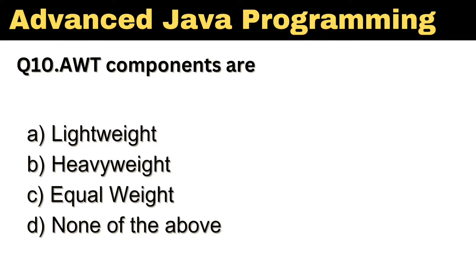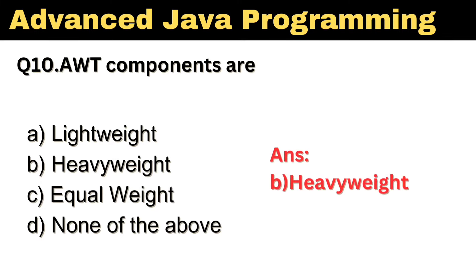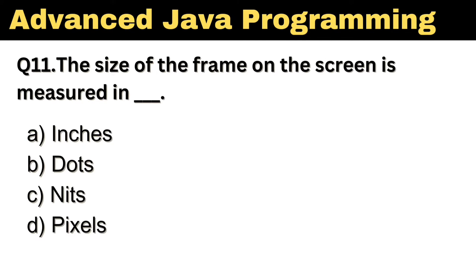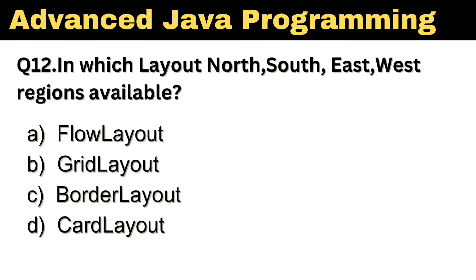Question No. 10: AWT components are dash. The right answer, Option B, Heavyweight. Question No. 11: The size of the frame on the screen is measured in dash. The right answer, Option D, Pixels. Question No. 12: In which layout are North, South, East, West regions available? The right answer, Option C, Border Layout.